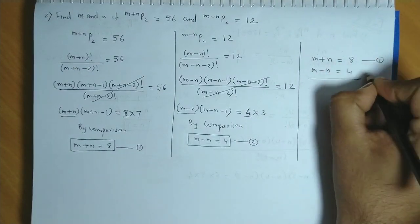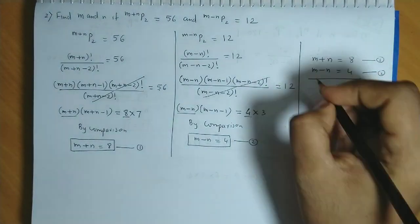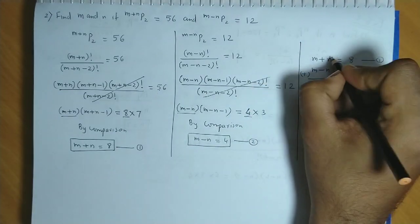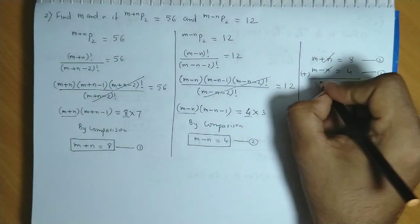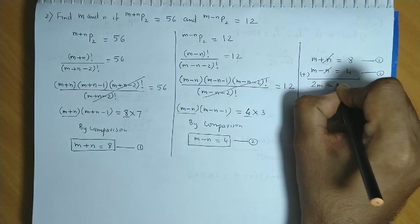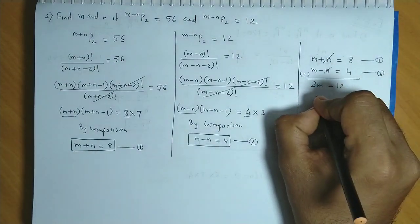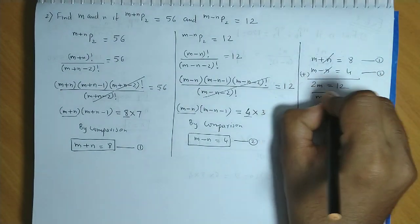This was equation 1, this is equation 2. Now if we add the two equations, n gets cancelled. So you have 2m equal to 12, so m is equal to 6.